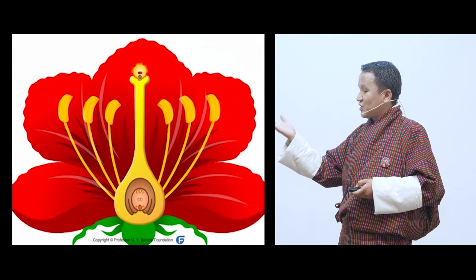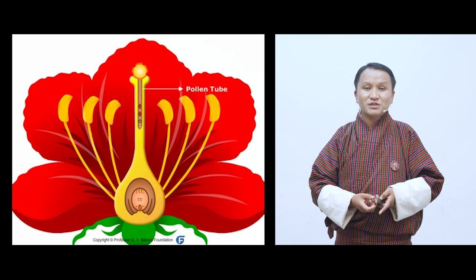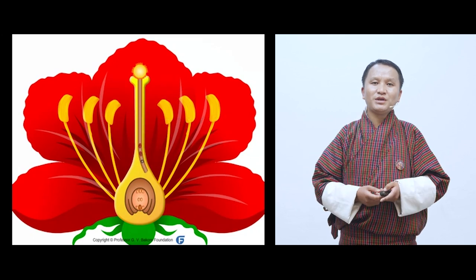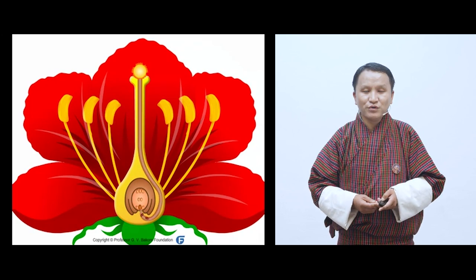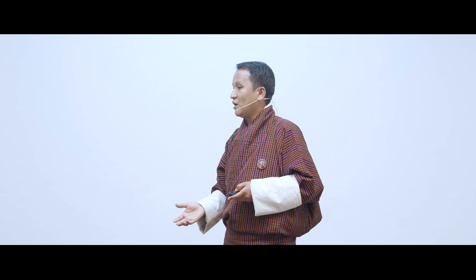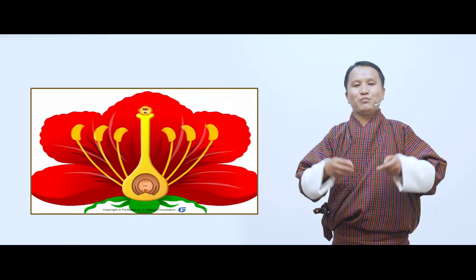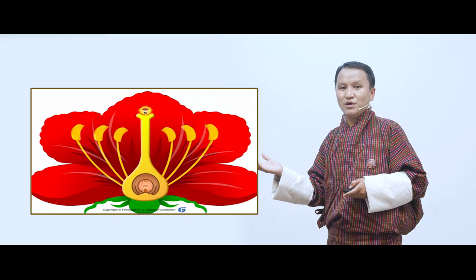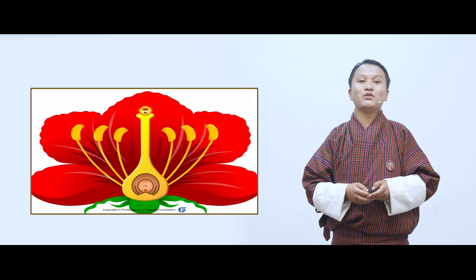We have finished looking at the pre-fertilization event. Once pollen grains have formed and pollination has taken place, the pollen grain lands on the stigma and starts moving through the style, forming a pollen tube that travels into the ovary and meets with the ovule, resulting in fertilization. However, the stigma must receive compatible pollen for germination to occur — not all pollen grains that land on the stigma will germinate.